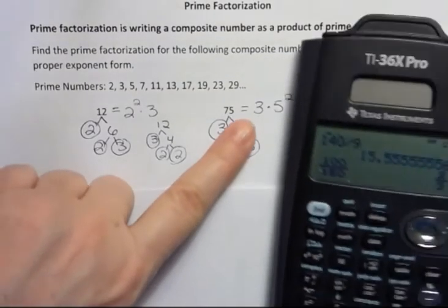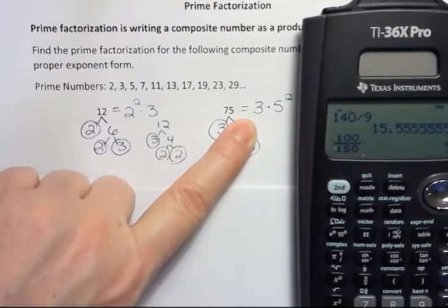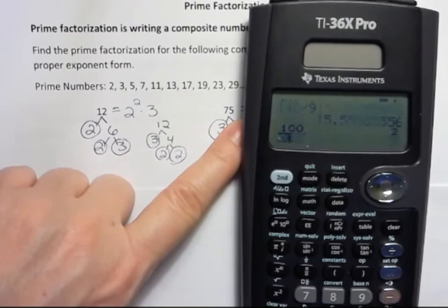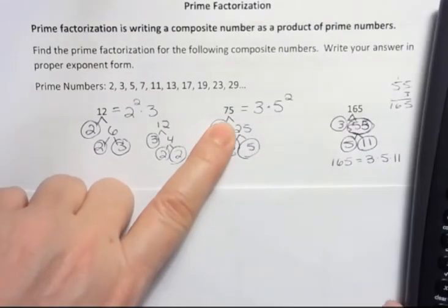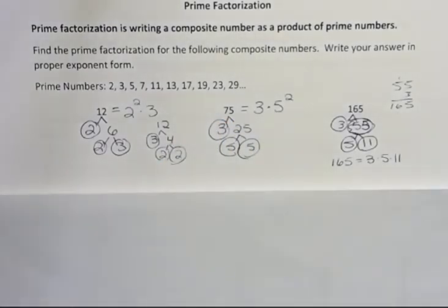Let me show you how to check that second one. 3, 5 to the second power. 3 times 5 to the second power. 3, let me clear all this out. 3 times 5 to the second power equals 75. So when you're finished, you can always go back and multiply and see if that actually works out.